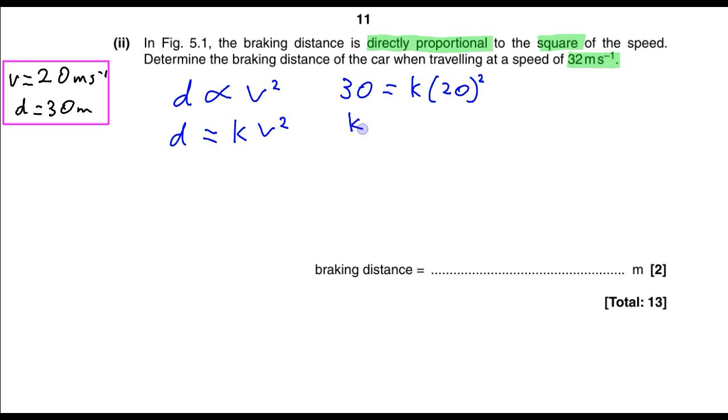Rearranging this equation, we get that k is 30 over 20 squared, which is 3 over 40.